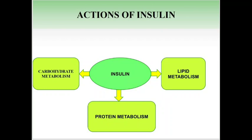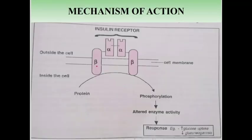In summary of actions: in carbohydrate metabolism, insulin inhibits gluconeogenesis and glycogenolysis. In lipid metabolism, it enhances lipoprotein lipase activity. In protein metabolism, it is involved in both anabolic and catabolic effects.